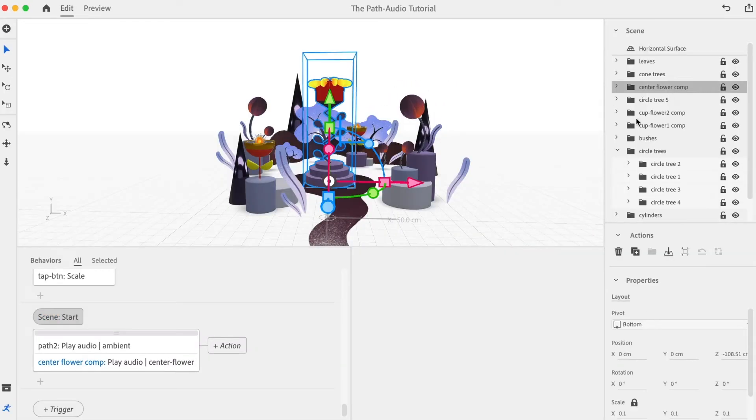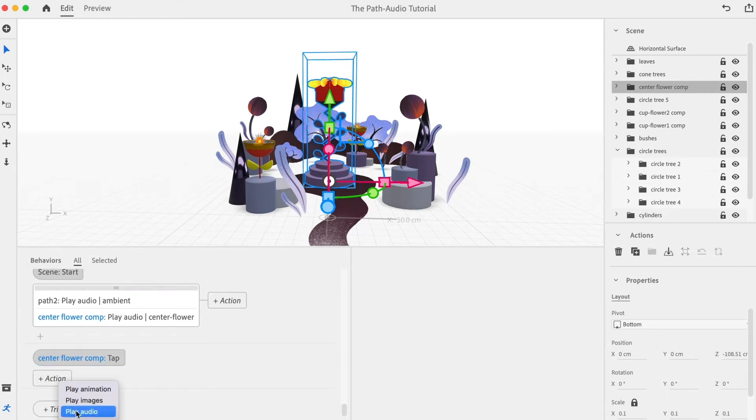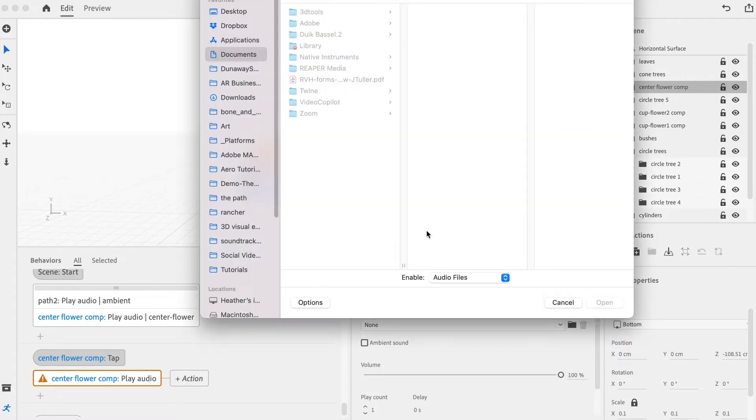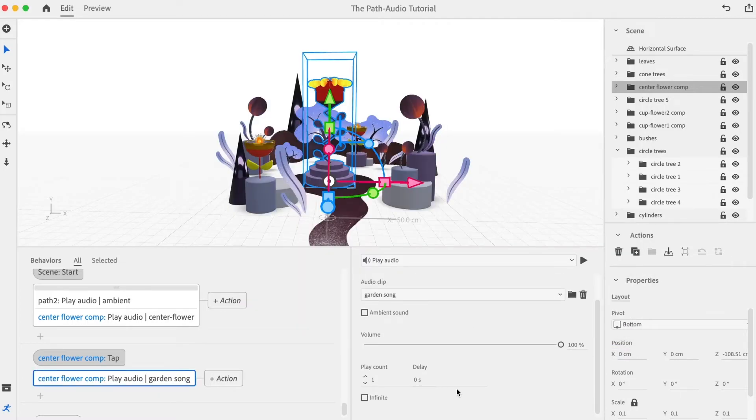I'll select the center flower. Then I'll add a tap trigger and a play audio action. I'll direct it to the garden song. I'll select ambient and infinite.